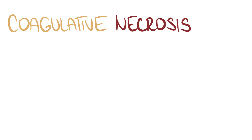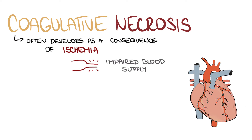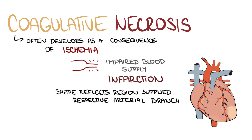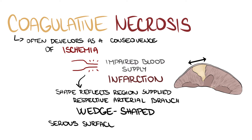Coagulative necrosis often develops as a consequence of ischemia. Such necrosis, caused by impaired blood supply, is called an infarction. Its shape reflects the region supplied by its respective arterial branch. Therefore, it is often wedge-shaped, widening towards the periphery. On the serous surface of the affected organ, there is often a reactive fibrinous inflammation.